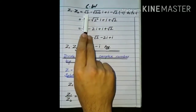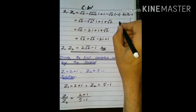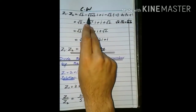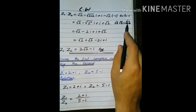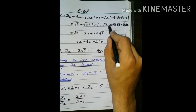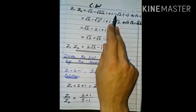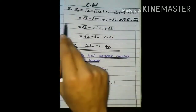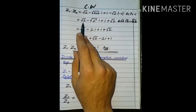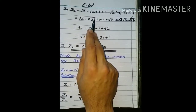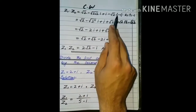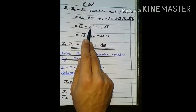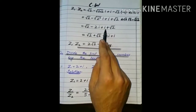under root 2 under root 2 الگ الگ radical میں تھے تو انہیں ایک ہی radical کے اندر لکھ سکتے ہیں — یہ rule apply کیا ہے۔ پھر plus iota اپنی جگہ پر اور minus under root 2 اور iota square آیا تھا۔ iota square کی value minus 1 ہے، اس کی جگہ پر minus 1 لکھا۔ minus minus plus اور 1 کے ساتھ multiply کرو تو under root 2 آجائے گا۔ square اور square root cancel ہو جاتے تو 2 آجائے گا۔ تو plus 2 under root 2 آجائے گا اور minus iota رہ جائے گا۔